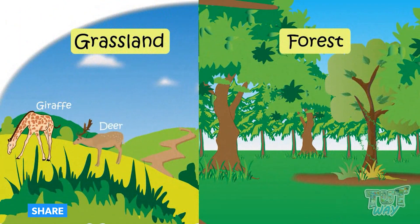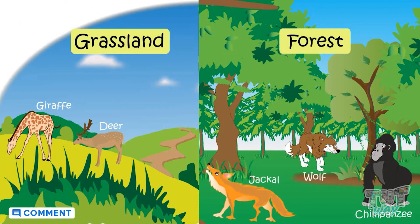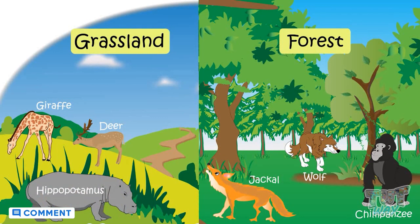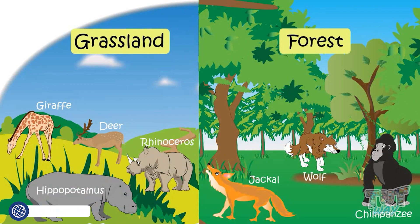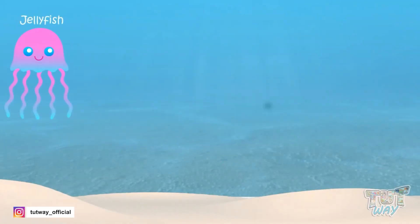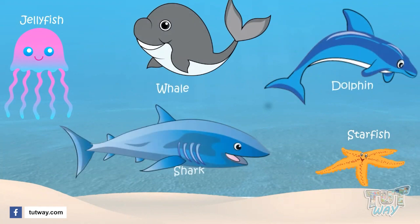Deer, chimpanzees, wolves, jackals, hippopotamuses, and rhinoceroses live in forests and grasslands. Jellyfish, starfish, whales, dolphins, sharks, and many more animals live in water.